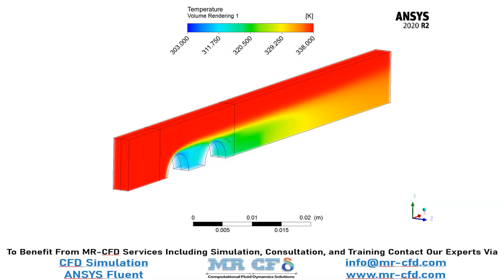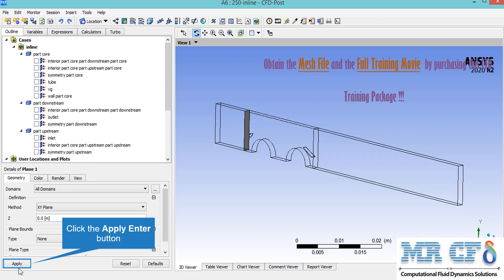In this slide, you can clearly see the temperature distribution inside our computational domain. We select the XY plane and set the value of Z equal to zero so that a plane is generated in the middle section of our geometry.